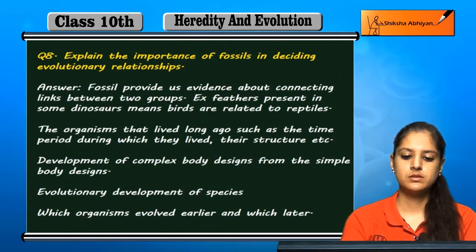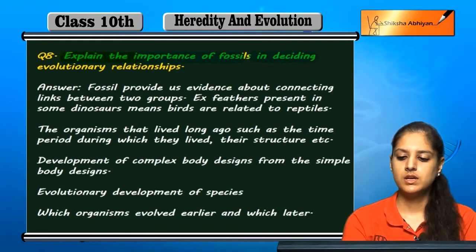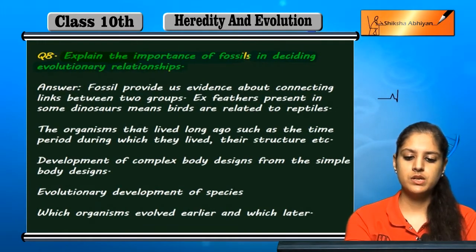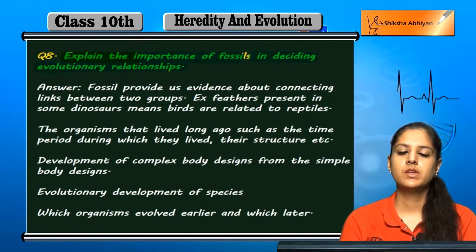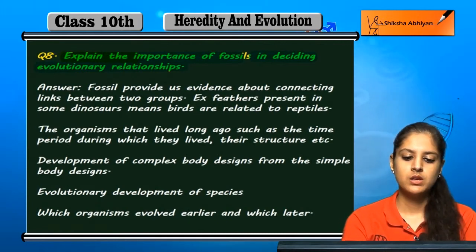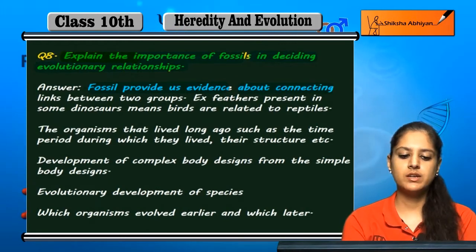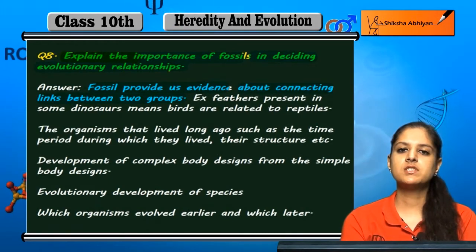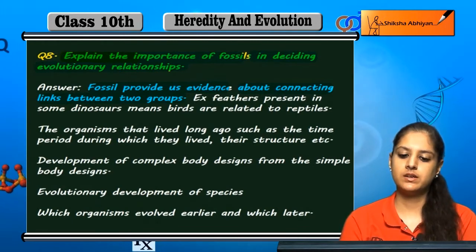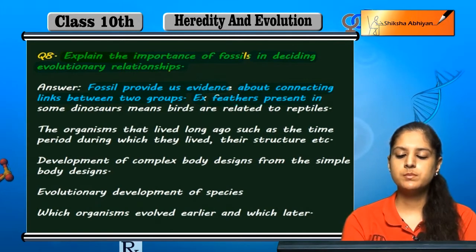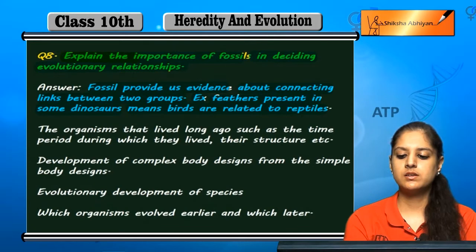Question No. 8: Explain the importance of fossils in deciding evolutionary relationships. Fossils provide us evidence about connecting links between two groups. Fossils tell us how two groups are connected or related. For example, feathers present in some dinosaurs means birds are related to reptiles.